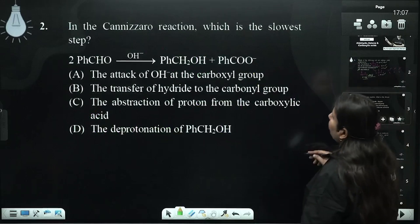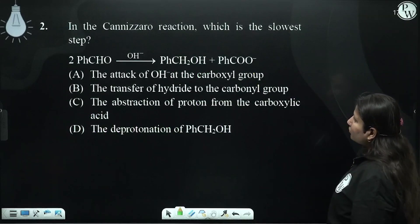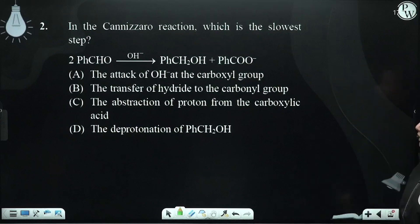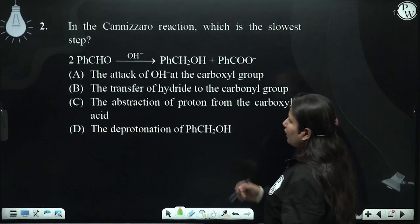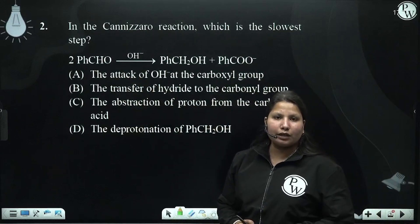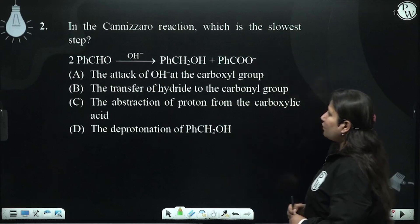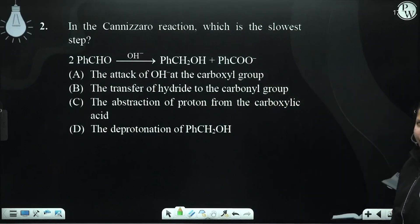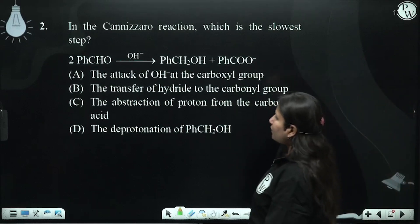In the Cannizzaro reaction, which is the slowest step? We have seen the slowest step. So the attack of what do you think of here? Benzaldehyde. The Cannizzaro reaction - whether the alpha hydrogen is present or not, it doesn't matter. And here, we take the concentrated base.